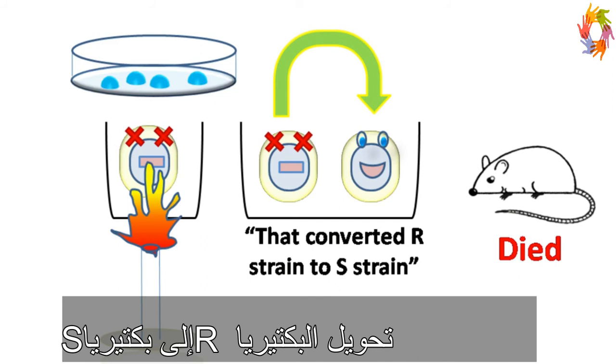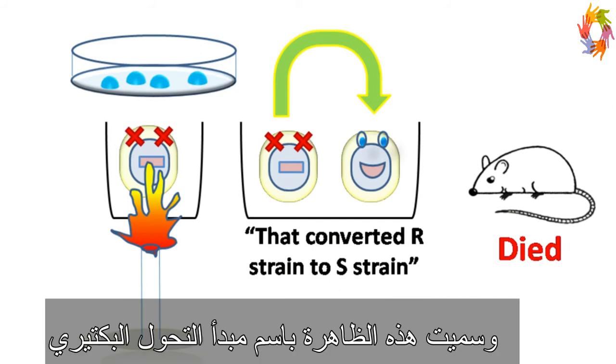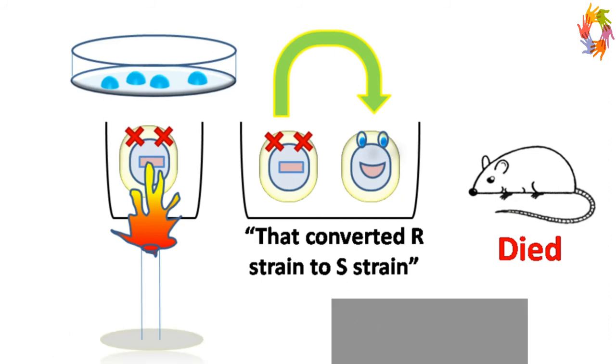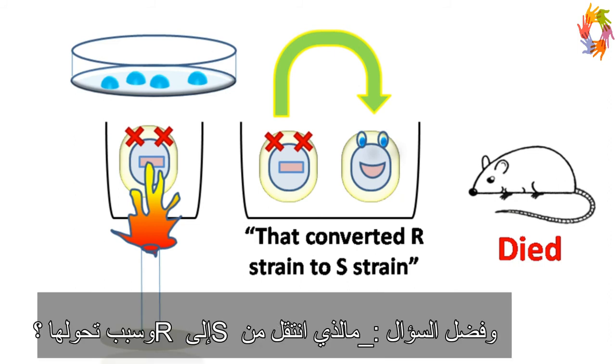And this phenomenon is known as the transforming principle. Griffith did not know what was getting transferred from the heat-killed S strain to the live R strain.